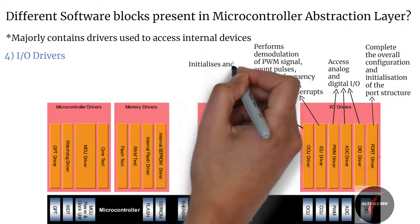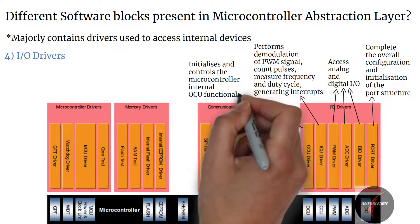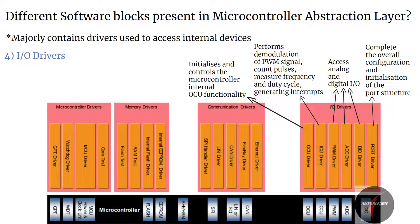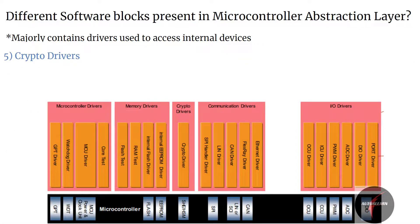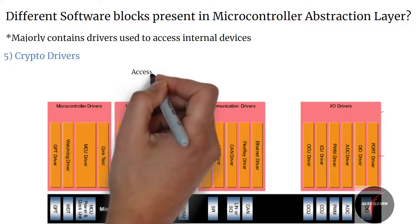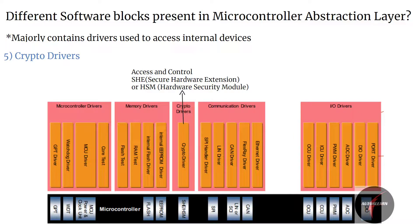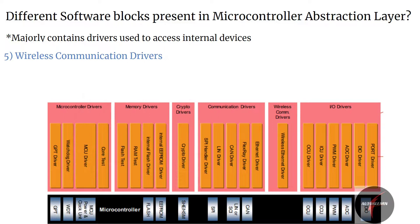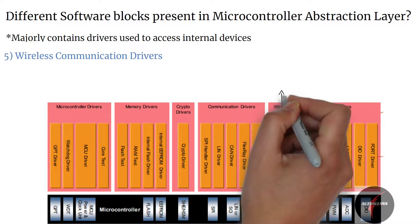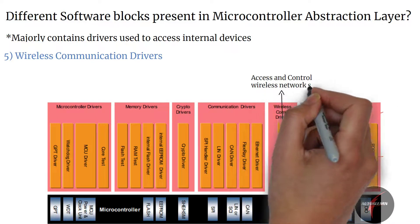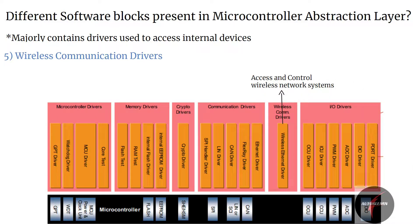The OCU (output compare unit) driver provides functions for initialization and control of microcontroller internal OCU functionalities. It allows comparing and acting automatically when the value of the counter matches a defined threshold. Crypto drivers contain drivers for crypto devices such as SHE (Secure Hardware Extension) or HSM (Hardware Security Module). Wireless communication drivers contain drivers for wireless network systems, which could be in-vehicle or off-board communication, such as wireless Ethernet connection.